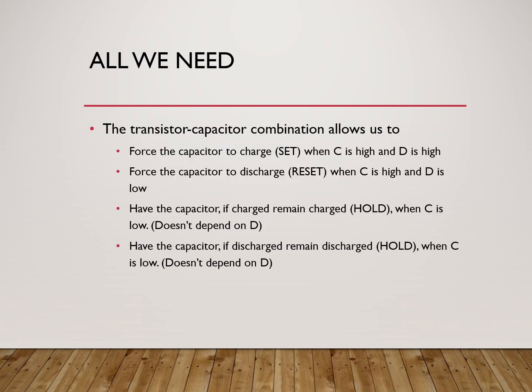So the simple transistor-capacitor combination gives us all we want. It allows us to force the capacitor to charge — to set — when C is high and D is high: C allows the writing to occur and D is the data, so we are writing a high. It allows us to force the capacitor to discharge — to reset — when C is high and D is low, writing a low. When C is low, the transistor's effective resistance is quite high and we hold; it doesn't matter what we do with D, it holds the high. Similarly, if the capacitor is discharged and C is low so the transistor is off, it doesn't matter what D is — it will stay discharged and hold the low.